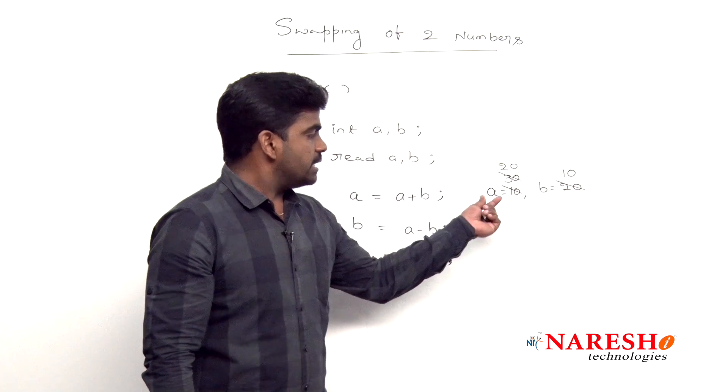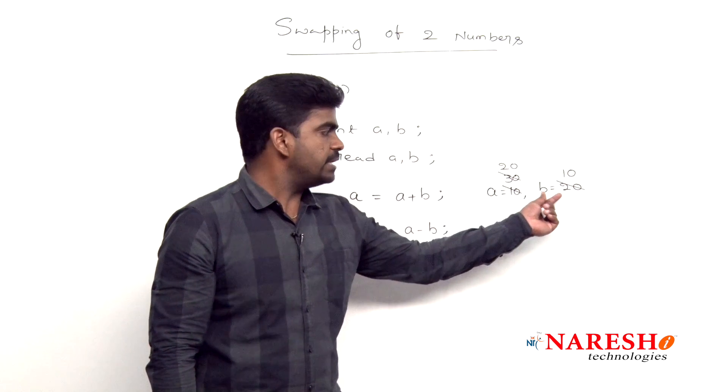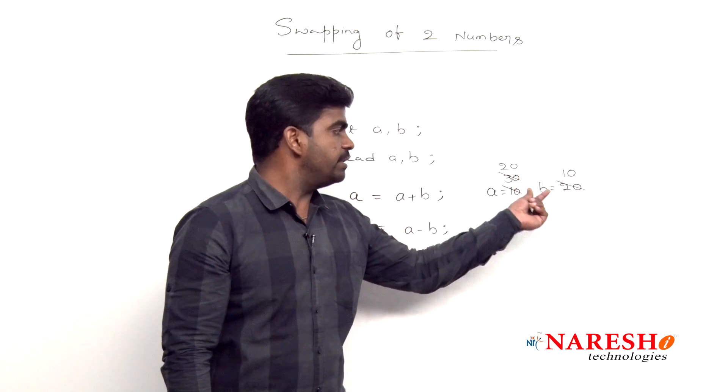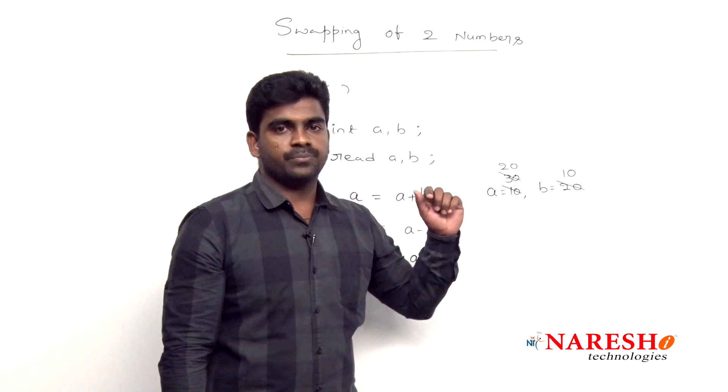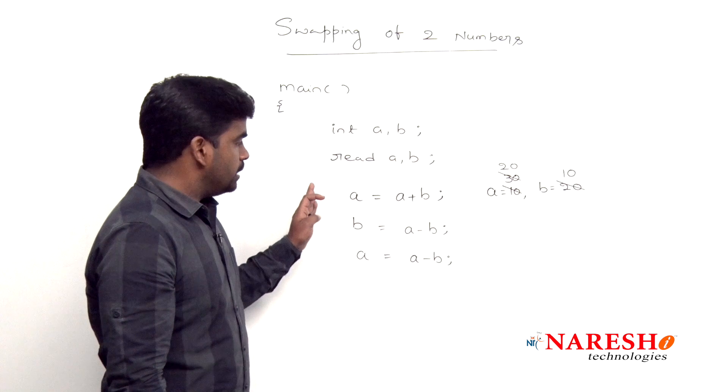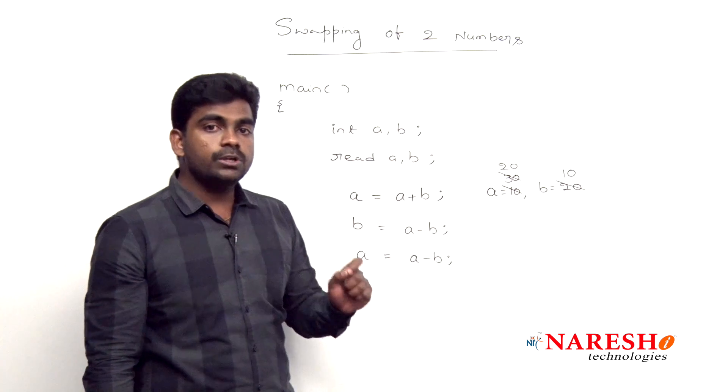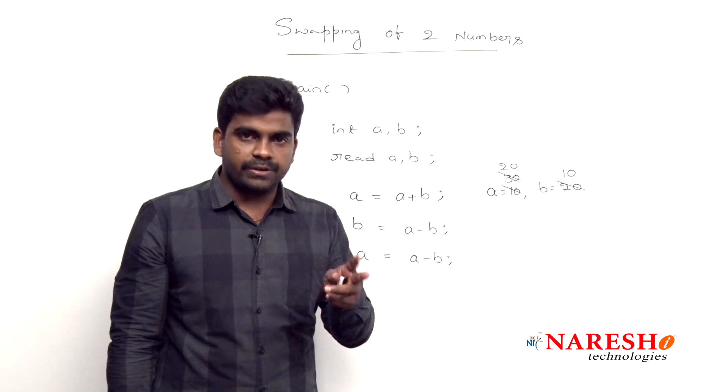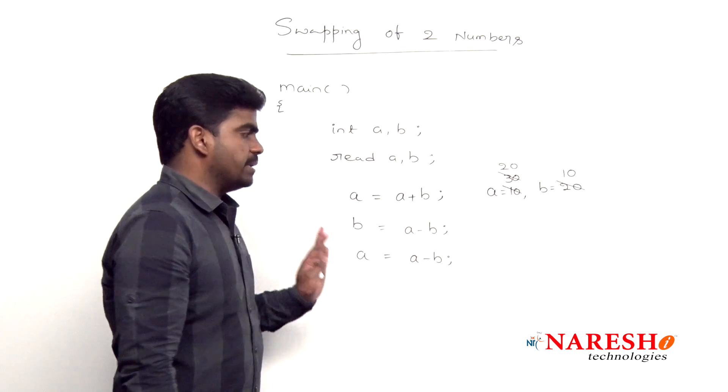Now look at this. Generally a value is 10 and b value is 20. Now a value become 20 and b value become 10. So total here it is three steps without using any temporary variable, using the same set of variables we are swapping.